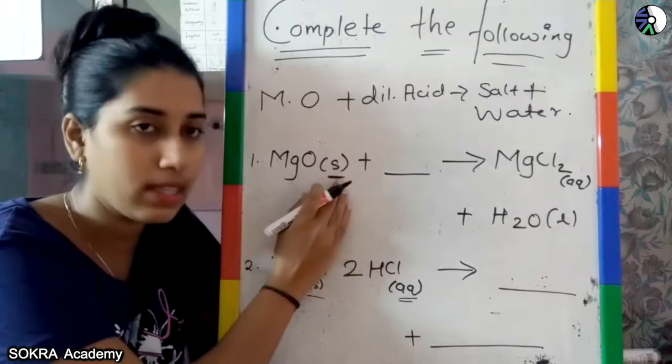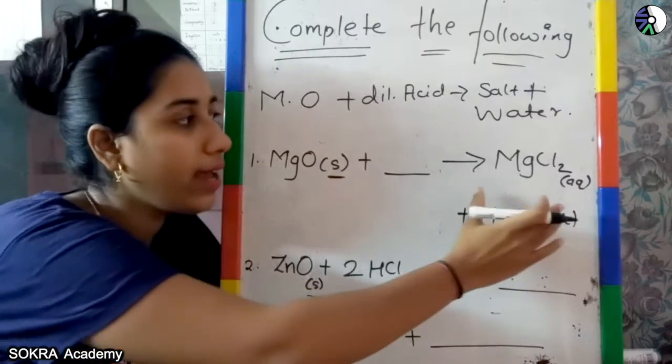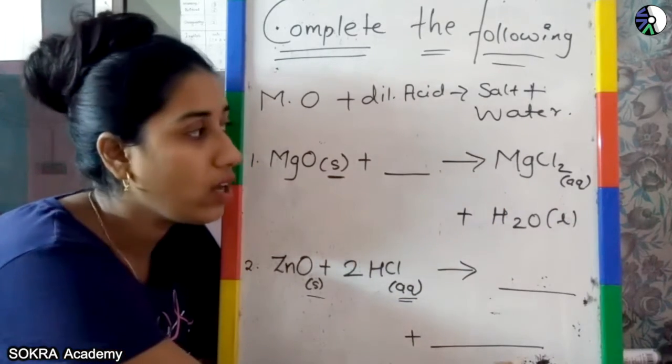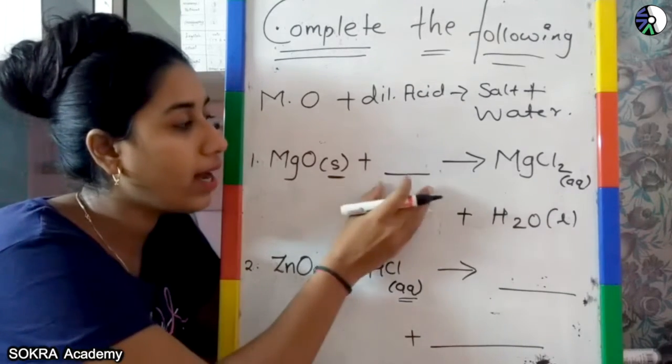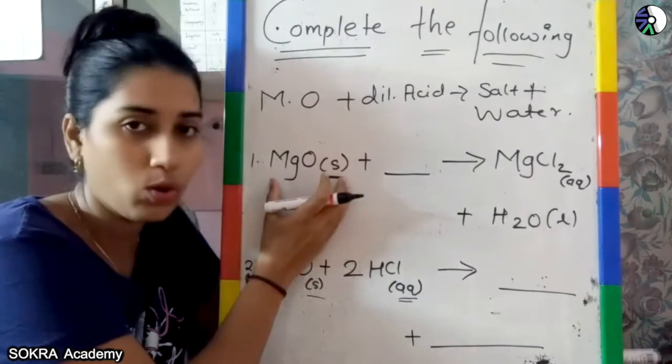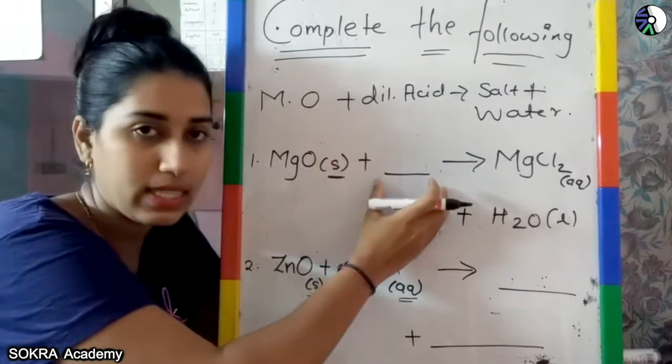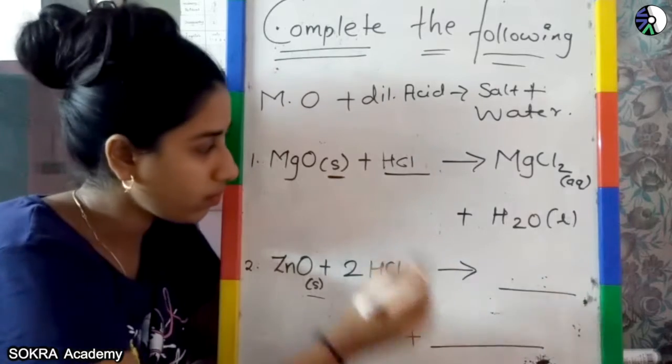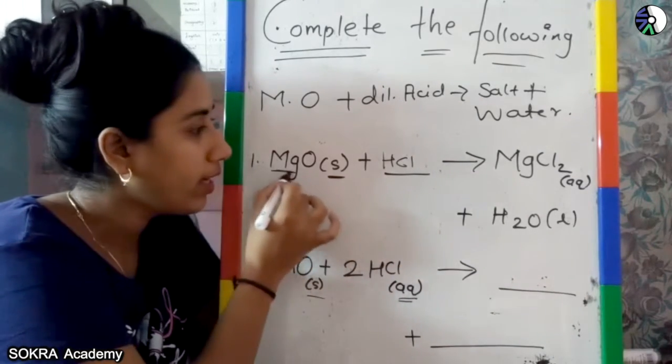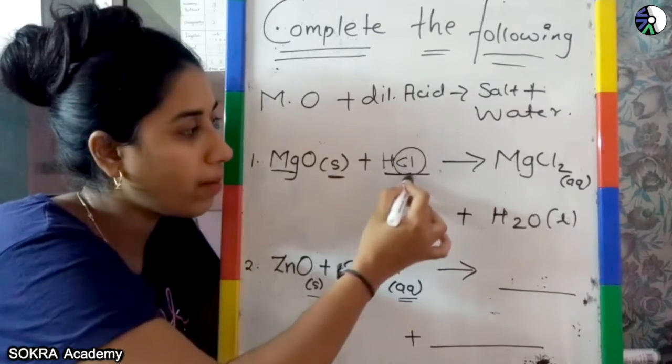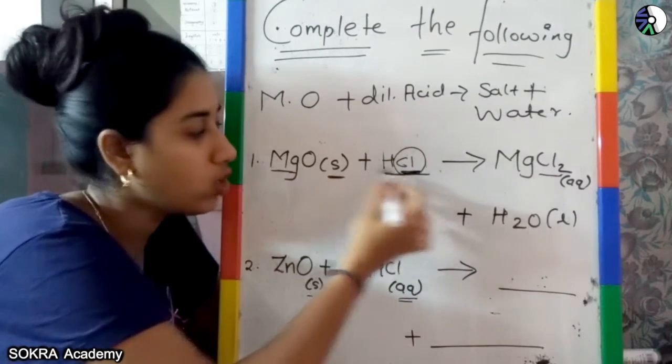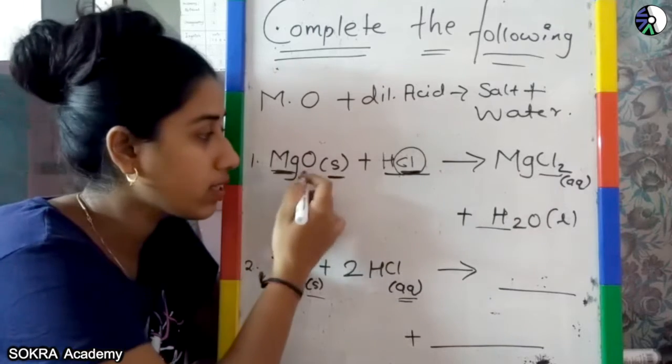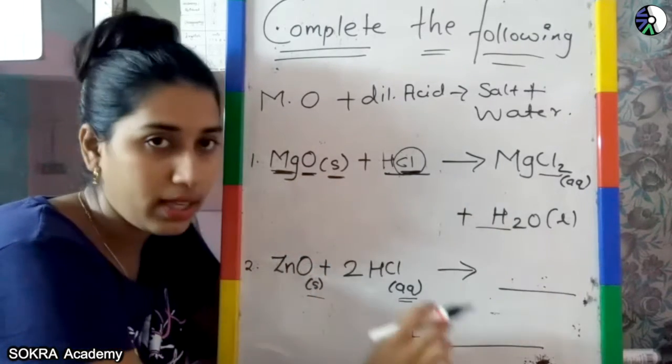MgO, magnesium oxide, it is in the solid state. Yahan pe, hum logo ko blank diya hai, yahan pe MgCl₂ diya hai, plus water ban raha hai. So now what we can add here, yahan pe kya hai? HCl. Phir kya hoga, ye Mg, ye Mg, kis ke saath combine ho raha hai, iske saath, Cl ke saath. So Mg, aur yahan pe ishi liye, phir yahan pe kya ho jaga? H₂O. So I have written MgCl₂ over there.